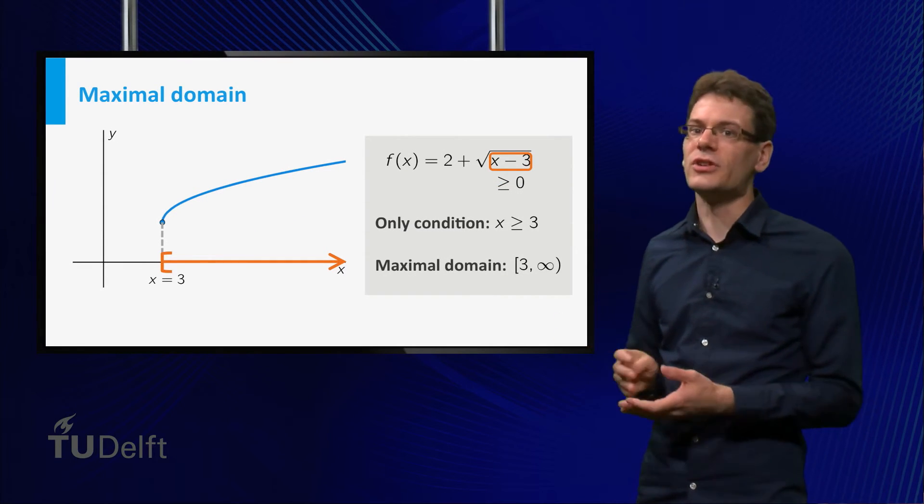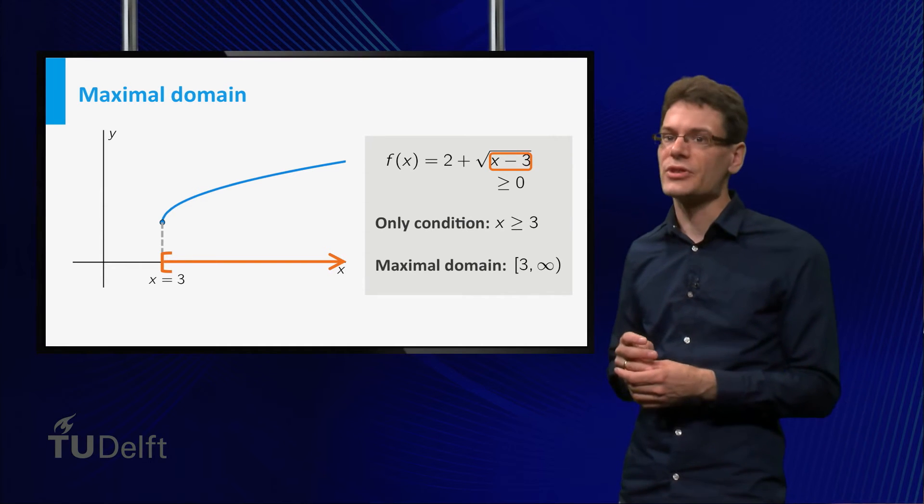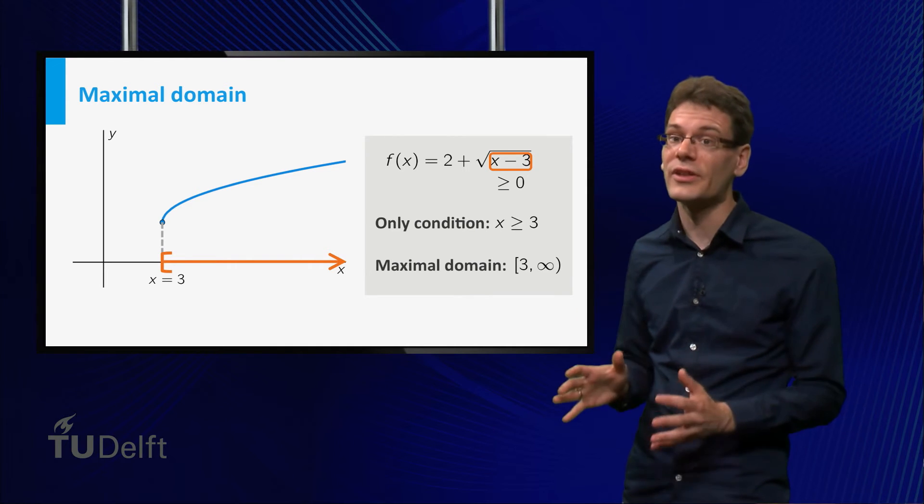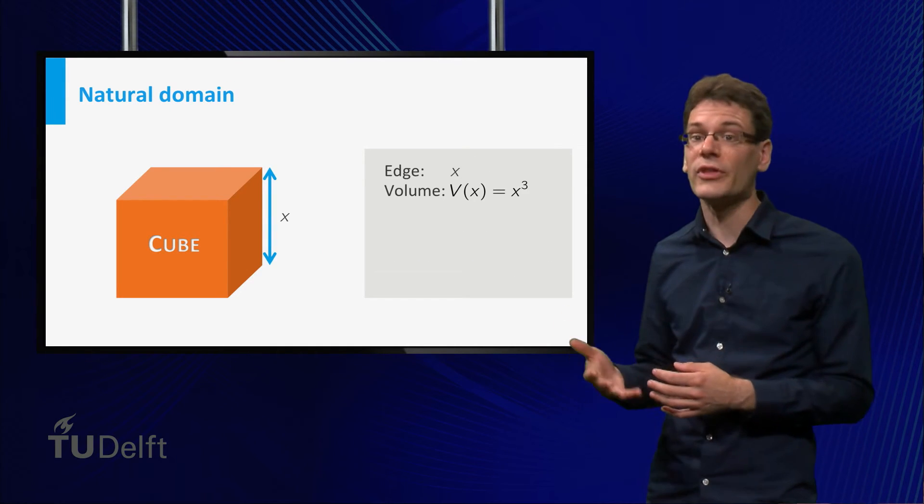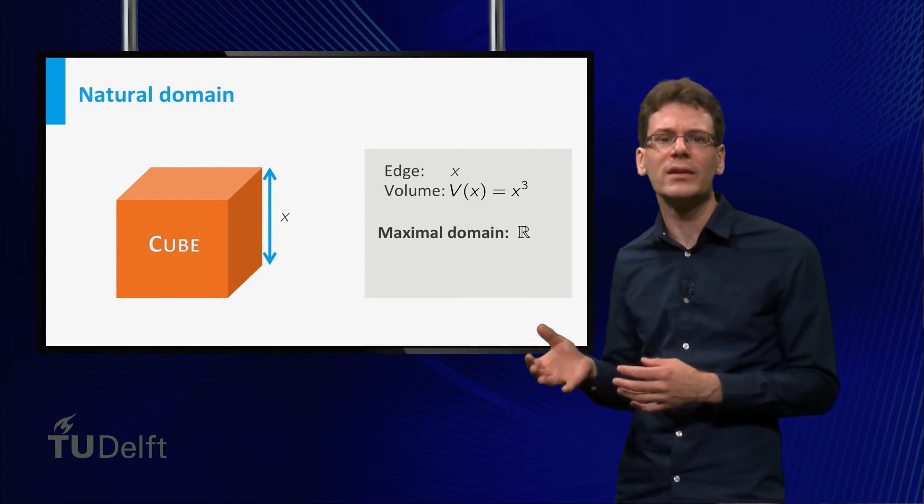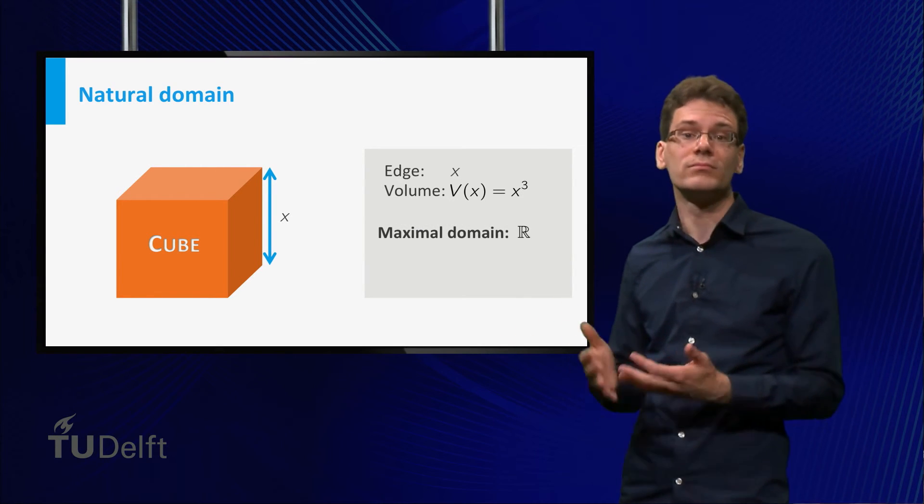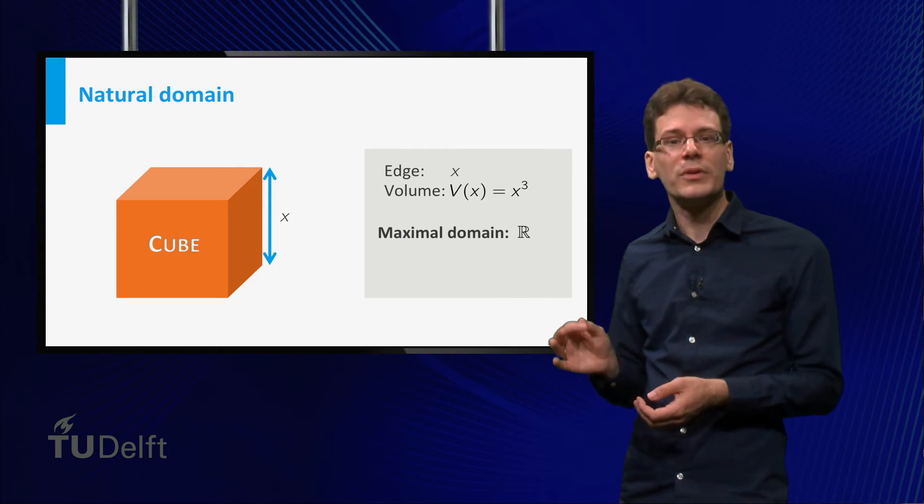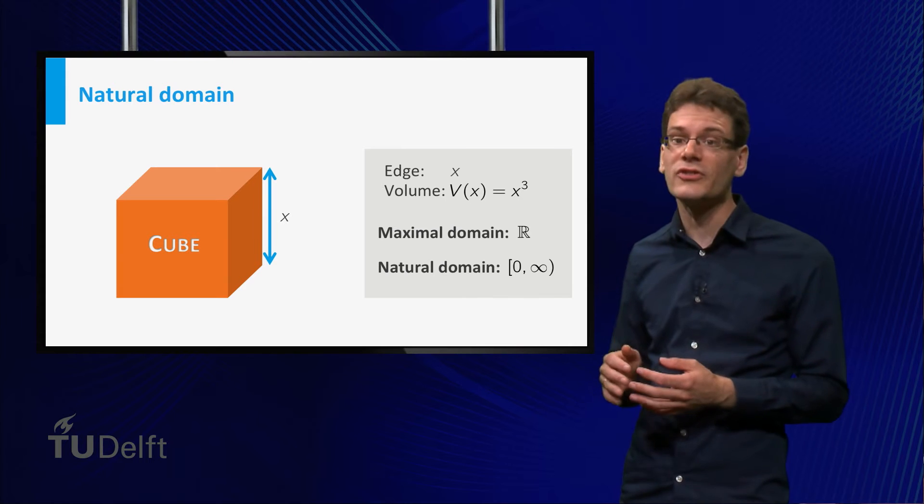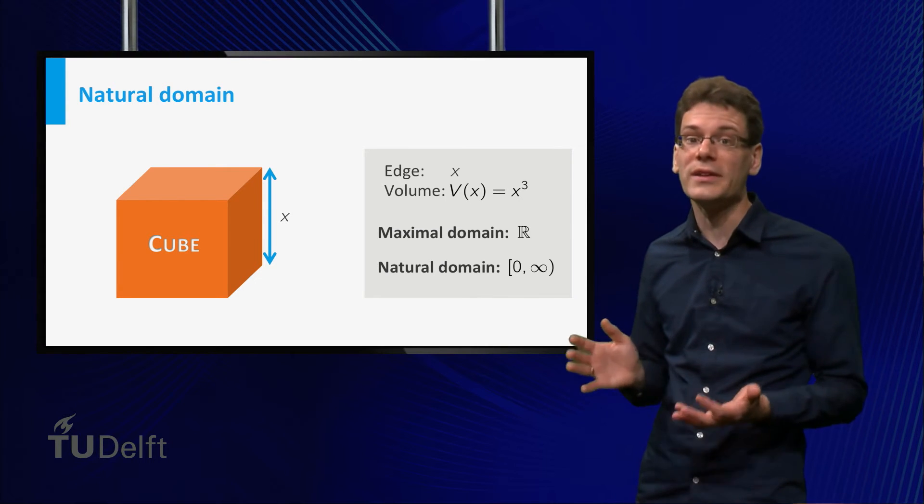Often we will not mention the domain of a function explicitly, and silently take it to be the maximal domain. However, sometimes the context makes restrictions natural. For example, think again of the volume function of a cube. The maximal domain is the set of all real numbers, which we denote by ℝ. But given the context, it is natural to restrict to the set of numbers larger than or equal to zero, since only then the volume makes sense.